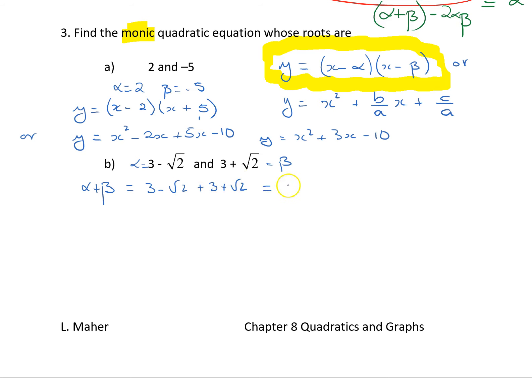The sum of the roots is actually 6. And the product of the roots is equal to 3 minus root 2, 3 plus root 2. That's sum and difference. 3, 3 is a 9 minus 2 is 7.